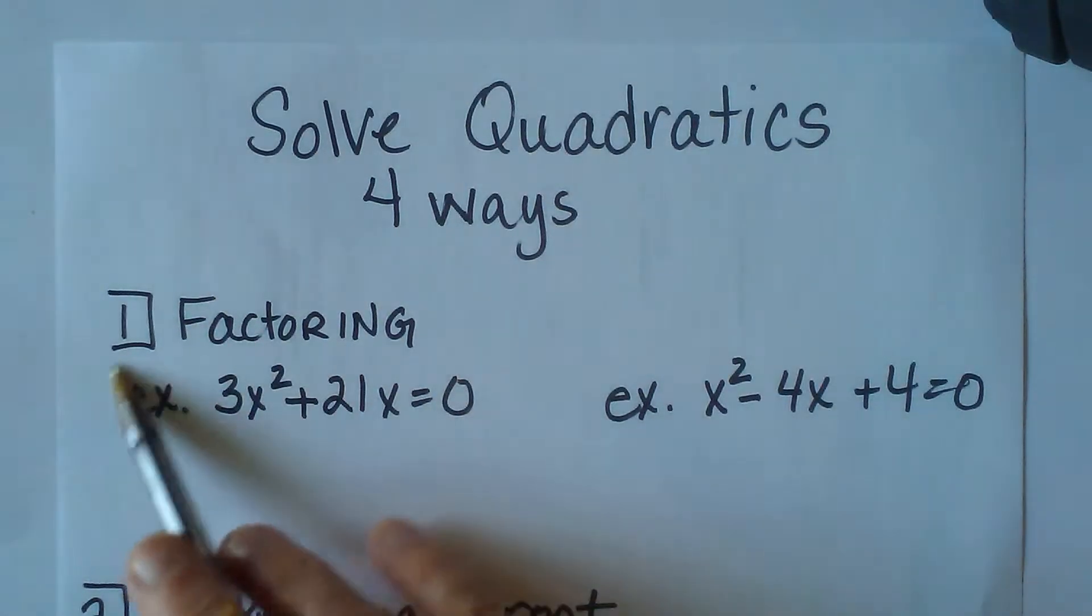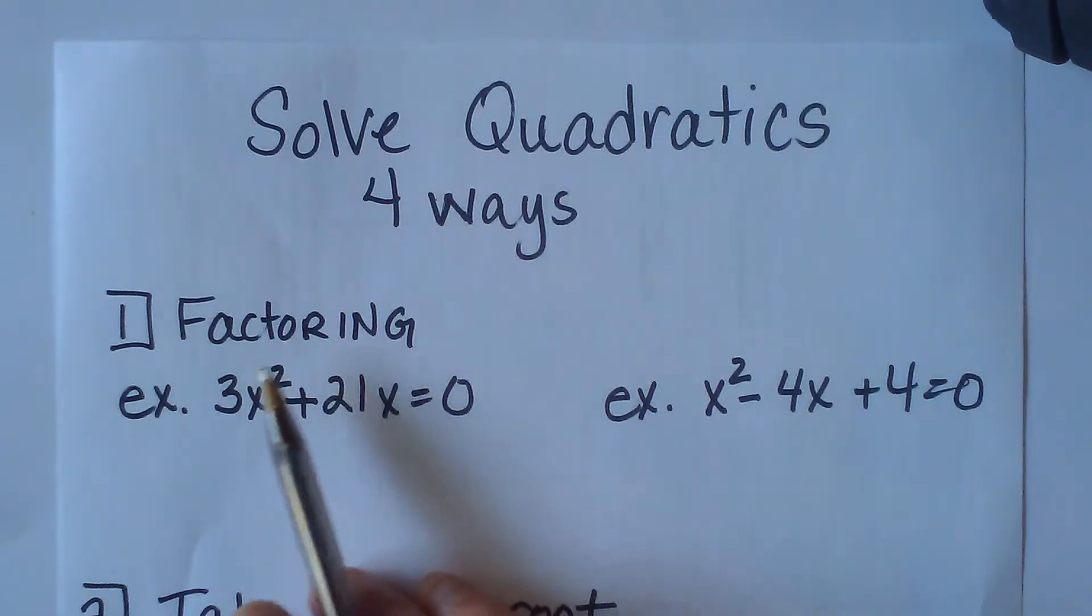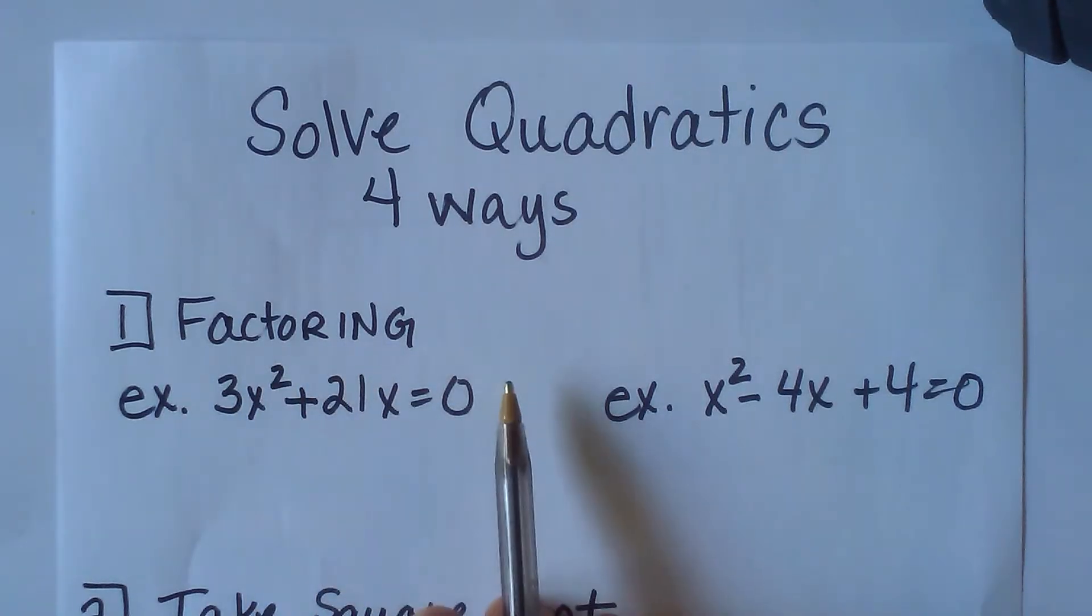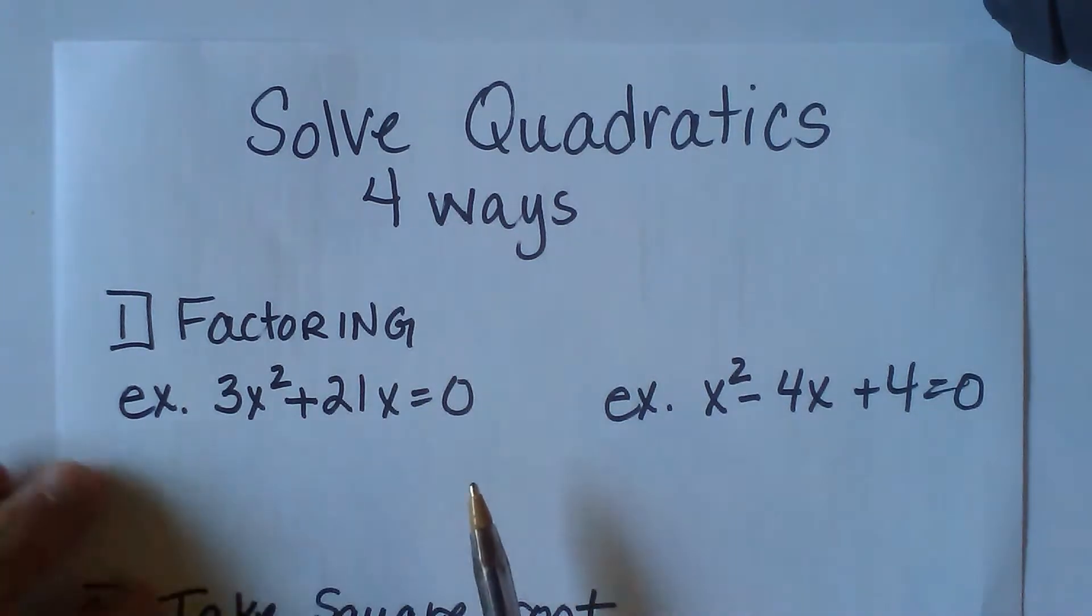The first one is factoring. There are lots of different ways to factor, so I'm just going to do two examples. First, you need to get your quadratic in descending order, so you want your terms from highest degree to lowest degree, and get it set equal to zero. Then you look for common factors.